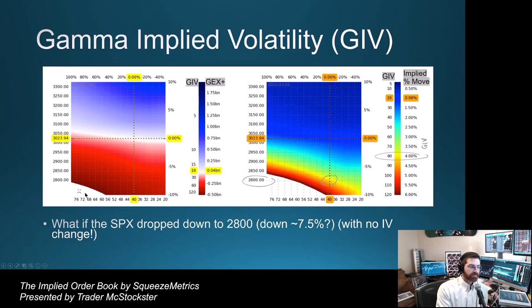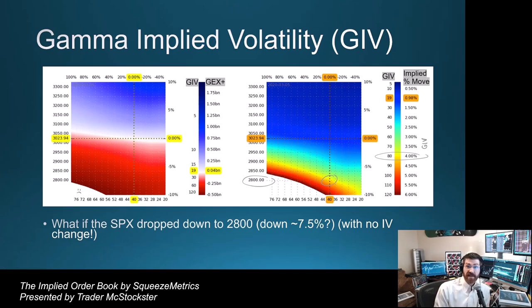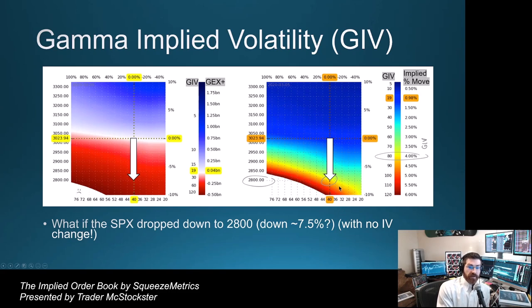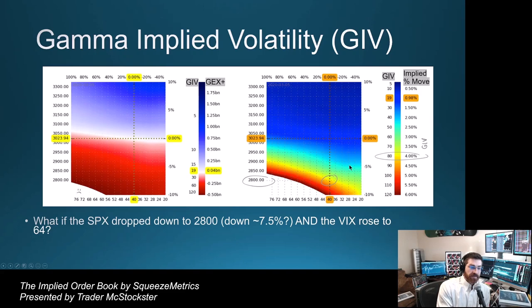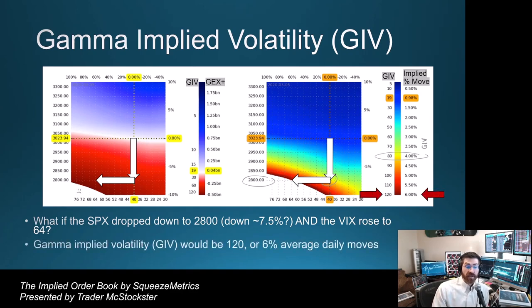Taking a closer look at the gamma implied volatility: the rainbow chart is a more granular look at it — at 19 on the original chart. They pose the question: what if SPX dropped to 2,800, which would be about 7.5% down with no IV change? Now the gamma implied volatility — in the yellow zone — implies a 4% average daily move. What if SPX dropped to 2,800 and VIX rose to 64? Now gamma implied volatility would be 120, or 6% average daily moves. This is what we call the market being offsides — VIX cannot possibly price volatility correctly since by moving up, the VIX causes liquidity to deteriorate. This means VIX will be underpriced all the way up to 80+. When customers have sold too many puts, crashes become feedback loops, and they only end when IVs can't possibly go up anymore.